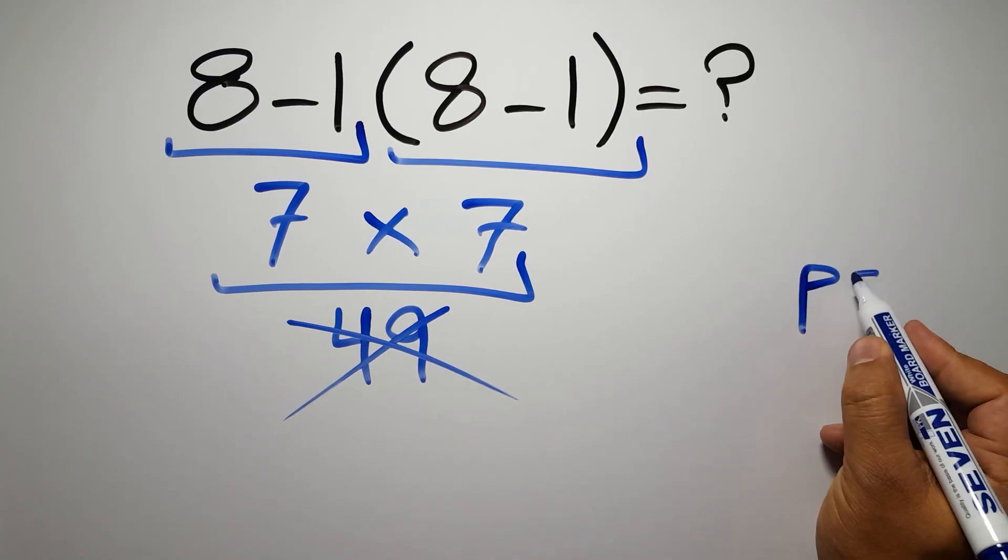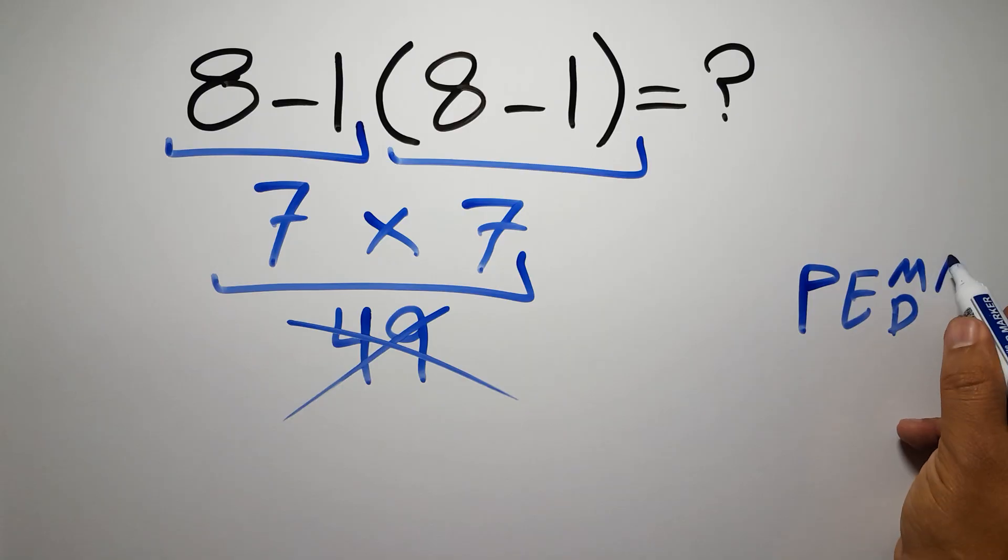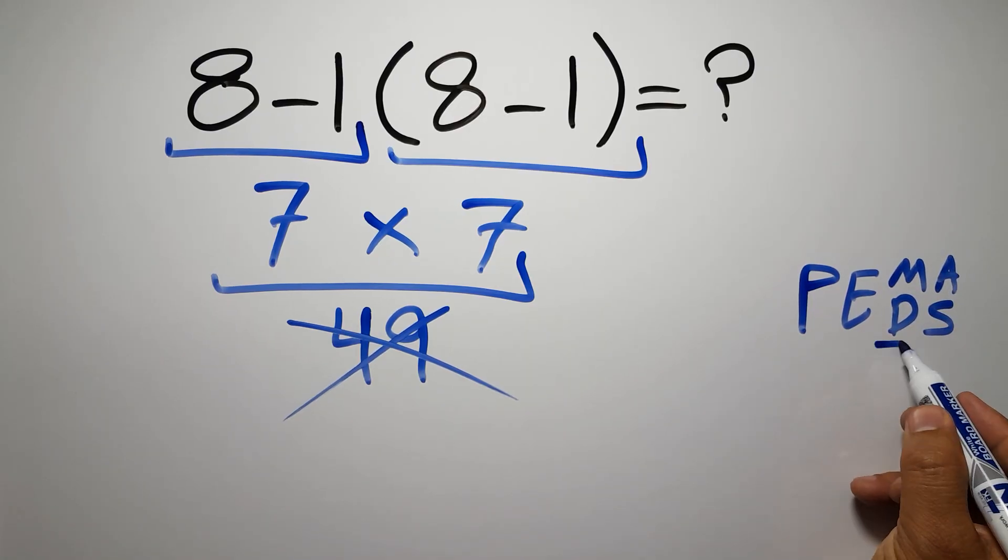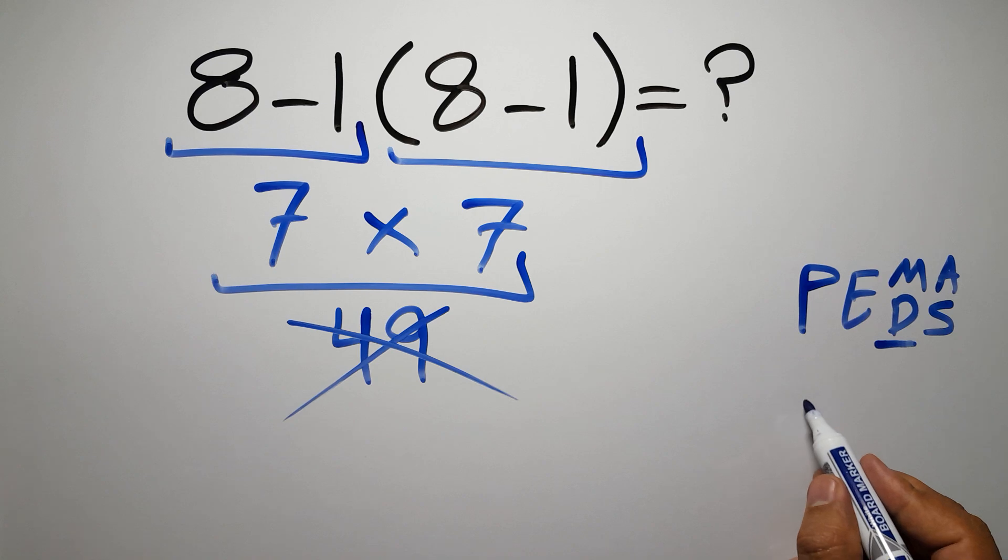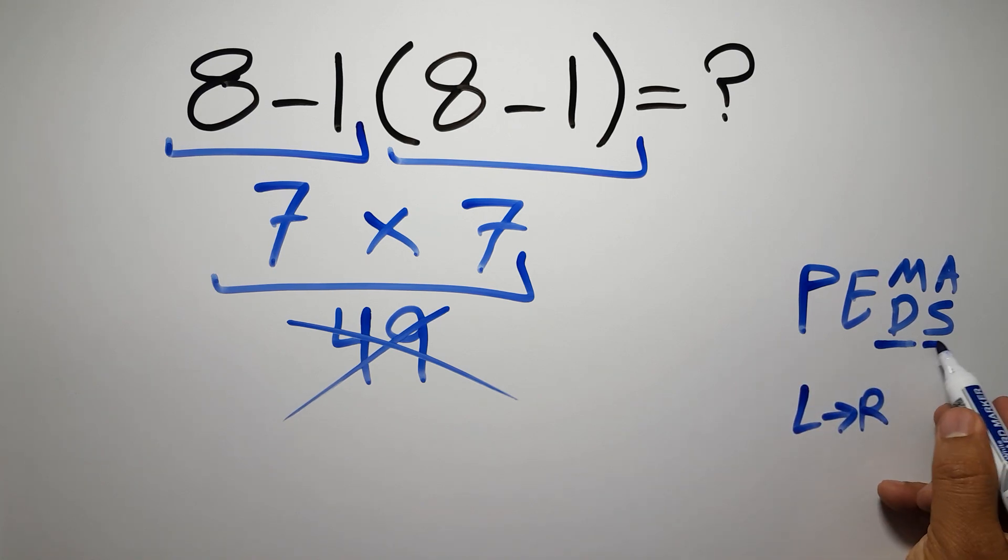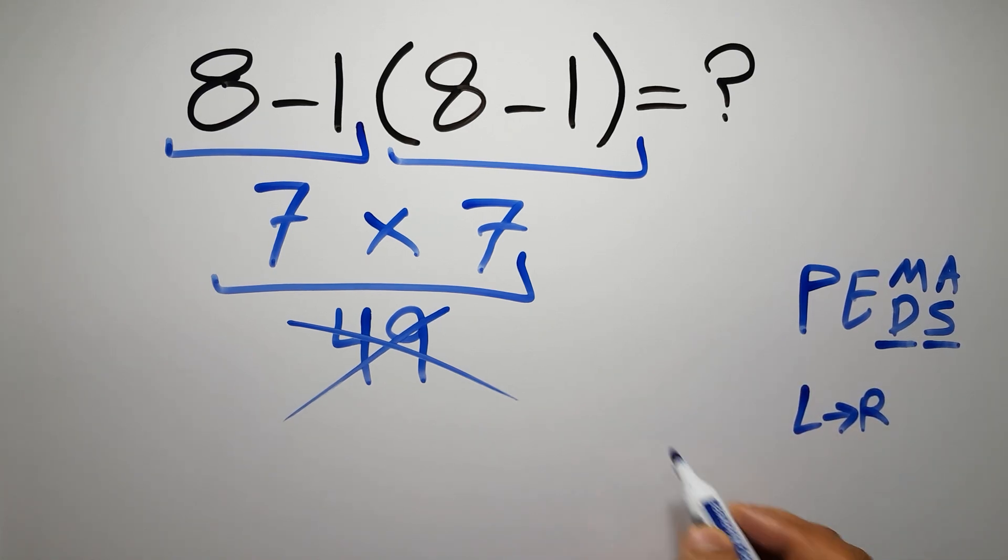to do parentheses, then exponents, then multiplication or division, and finally addition or subtraction. Remember that multiplication and division have equal priority and we have to work from left to right, and the same applies to addition and subtraction.